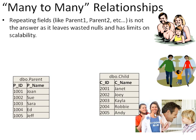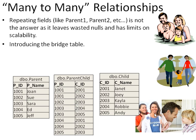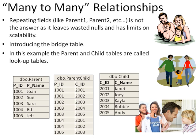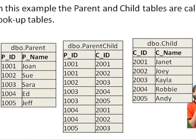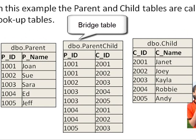So repeating fields like parent 1, parent 2 is not the answer. It leaves you with wasted nulls and has a lot of limits on scalability. We introduce the bridge table. In this example, the parent and child tables are called look-up tables. The table in the middle is called a bridge table, and sometimes called a junction or a mapping table.